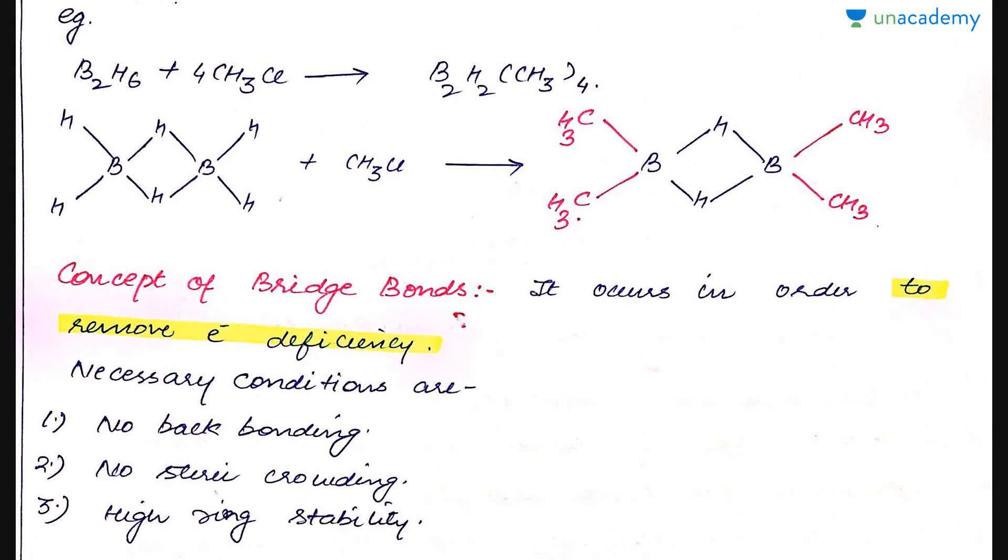We can illustrate with examples like diborane on reacting with methyl chloride: four hydrogen atoms are replaced by methyl groups, and the hydrogen atoms that are replaced are the terminal hydrogen atoms. Next is the concept of bridge bonding. Bridge bonding basically occurs in compounds to remove electron deficiency. Certain conditions need to be satisfied: the molecule should not have back bonding, should not be sterically crowded, and the ring formed should be stable, either a five-membered or six-membered ring preferably, but in some cases four-membered rings are also stabilized.